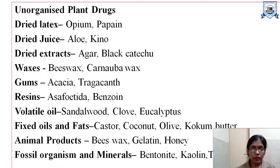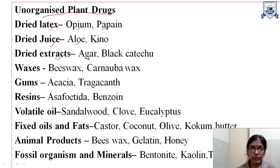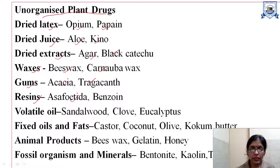Now let us look at unorganized plant drug examples. Dried latex — as in the case of opium and papain from papaya. Dried juice is used in some cases, for example aloe and kino. Dried extracts — for example agar and black catechu. Waxes — for example beeswax and carnauba wax. Gums — for example acacia and tragacanth. Resins — for example asafoetida and benzoin.